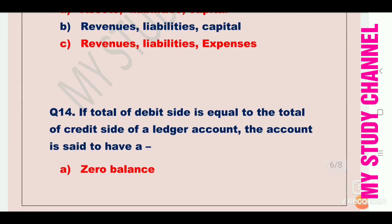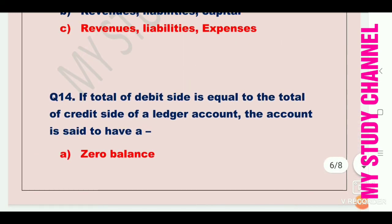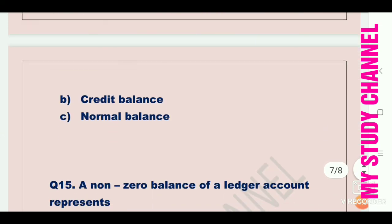Next question: if the total of debit side is equal to the total of credit side of a ledger account, the account is said to have zero balance. If debit and credit are equal in a ledger account, then the balance is zero. Answer: zero balance, option A.